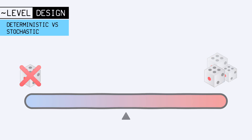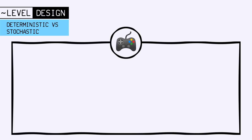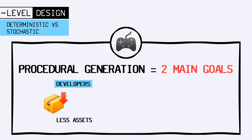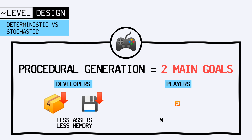Now, as we said before, in a video game, procedural generation can have two main goals. For game developers, it's a way of reducing the number of assets to make and reducing the required amount of memory. For players, it introduces more replay value by offering different challenges each time.